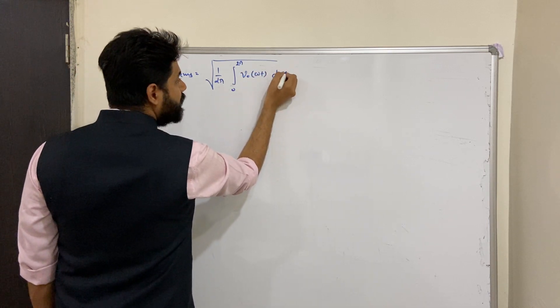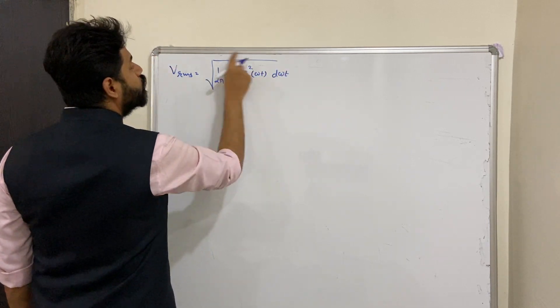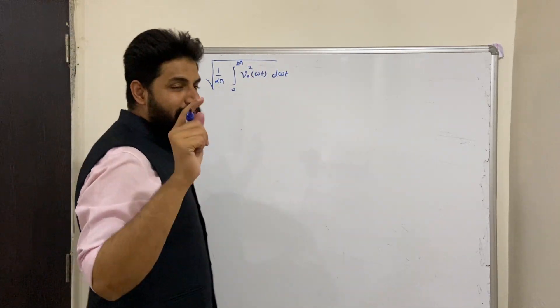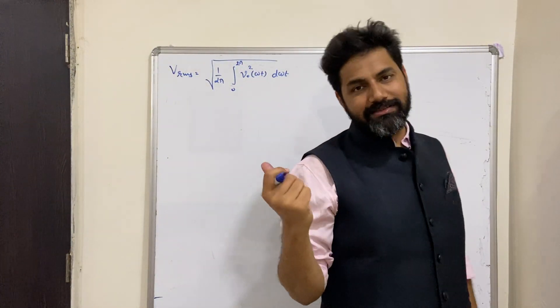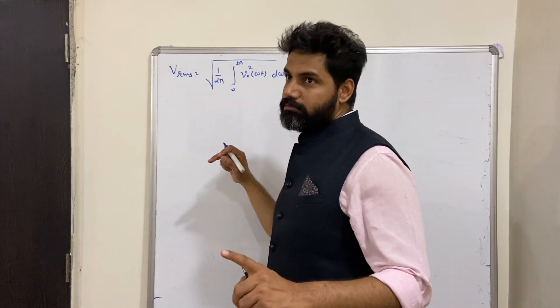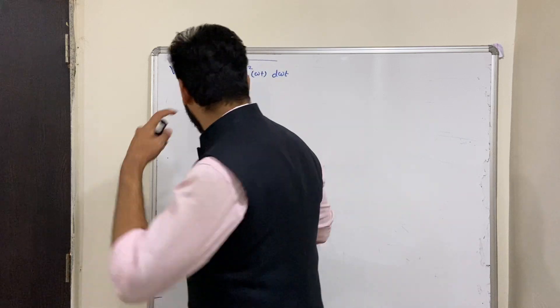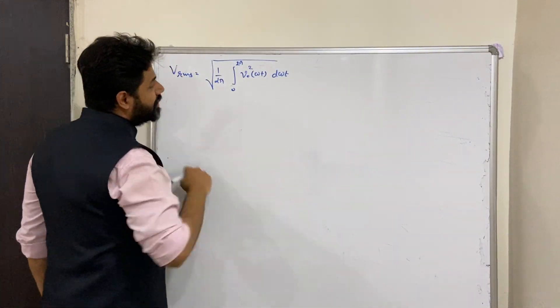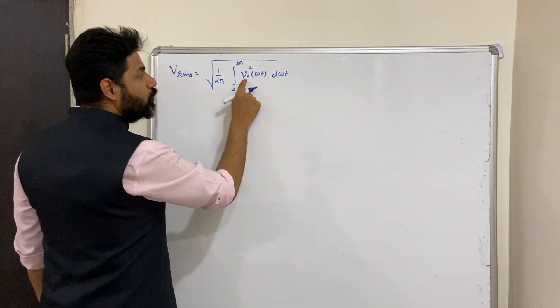So it is root mean squared value. Again, if you don't understand how all these things are coming, you should go and watch my videos. Link is given in previous video. So we have got this equation.